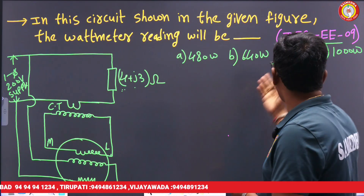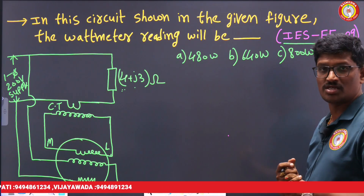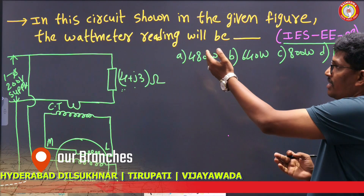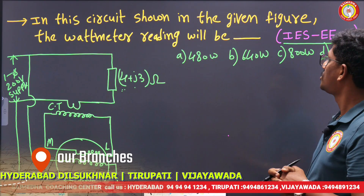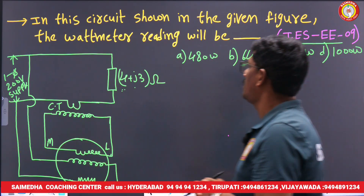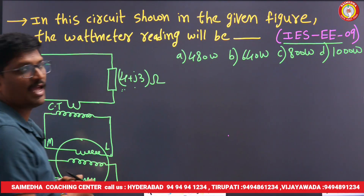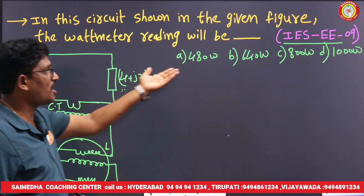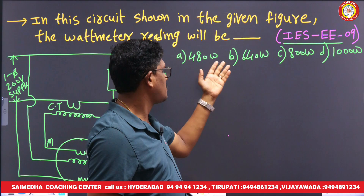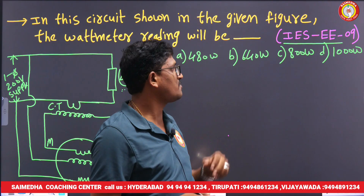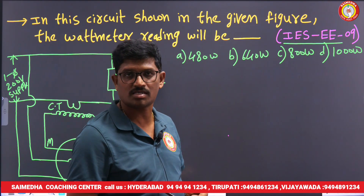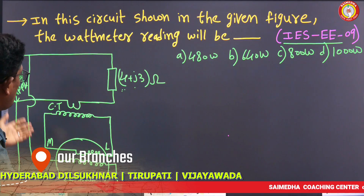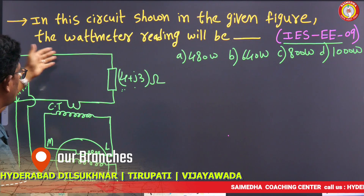This problem is from ESEEE 2009. Look at the problem — in the circuit shown in the figure, the wattmeter reads what? One figure is given with some options: 480 watts, 640 watts, 800 watts, and 1000 watts.